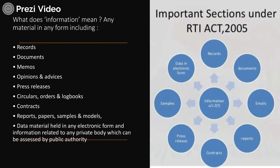This also covers NGOs that are aided by the government. Information falling into any of these categories may be sought: records, documents, memos, opinions, advices, press releases, circulars, orders, logbooks, contracts, reports, papers, samples, models, data, and materials in any electronic form. You can get all this information from central or state government officials simply by filing an RTI — either online for central government or in offline mode for state governments, by submitting a simple application to the PIO.